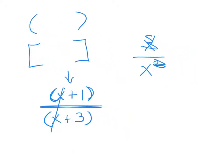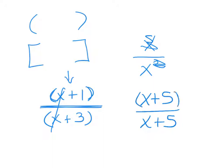Remember: if I have x + 5 over x + 5, can I simplify? Yes, because it looks identical and it's grouped together. This simplifies to 1, because anything divided by itself is 1.